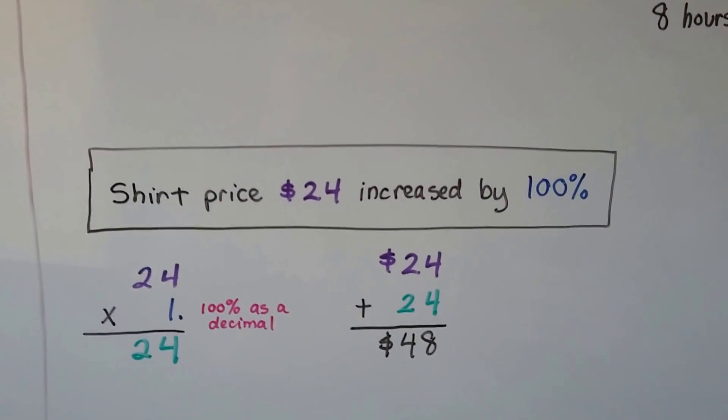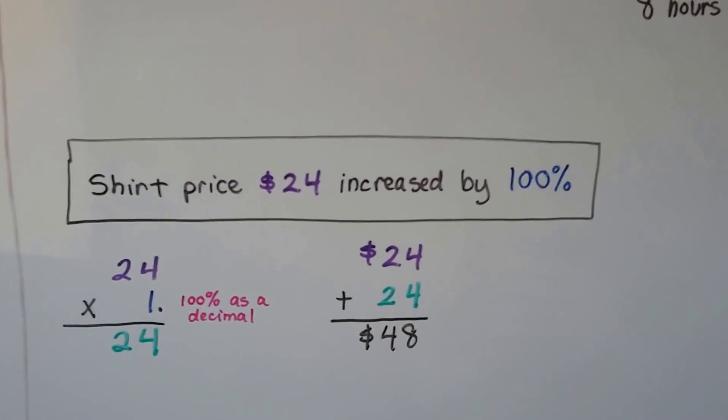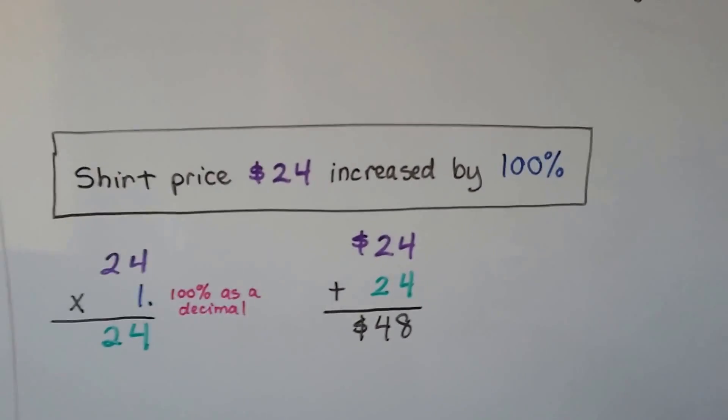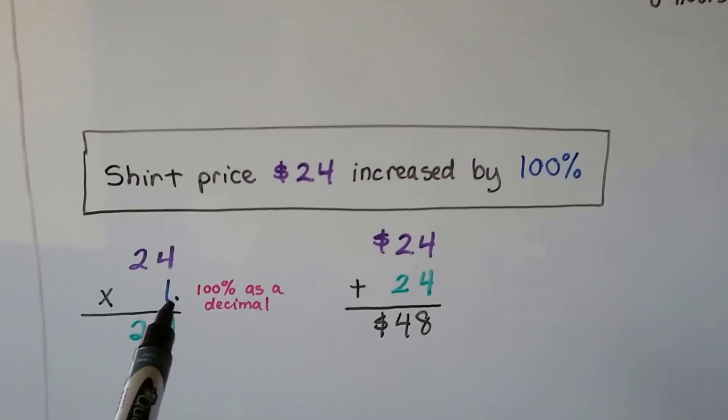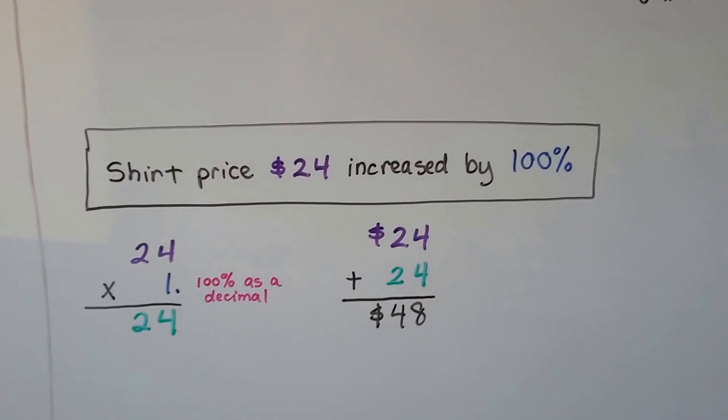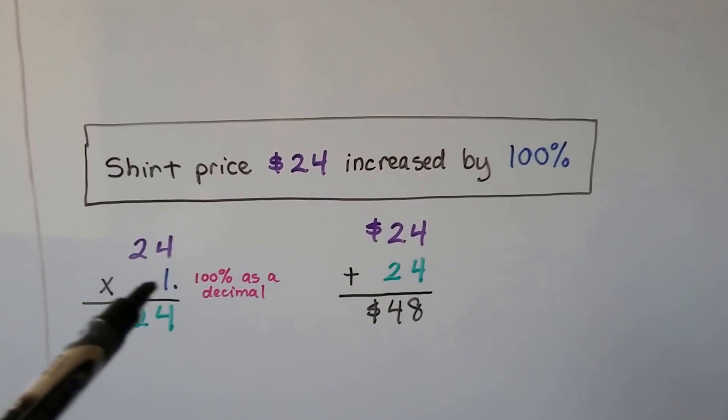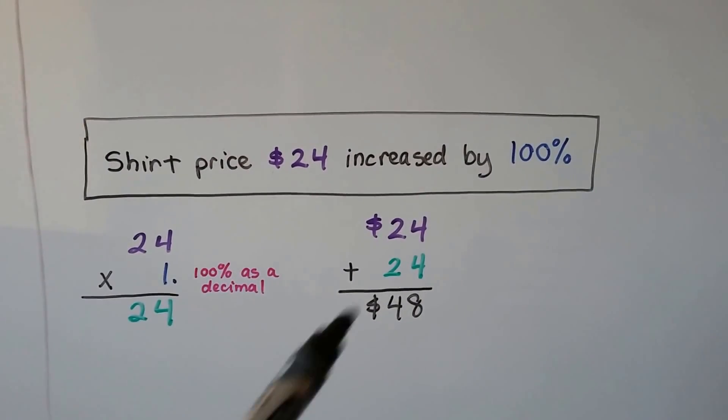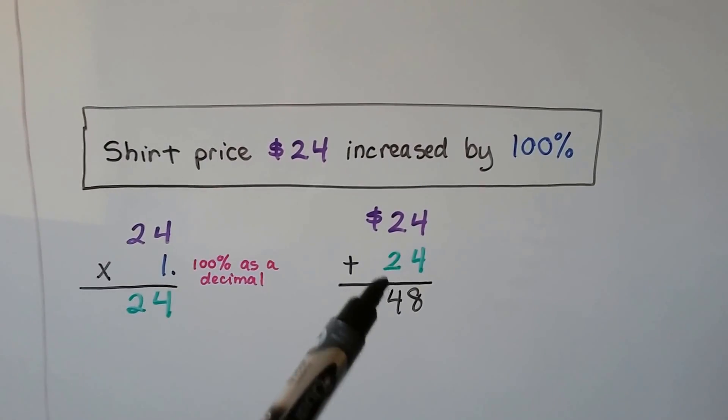A shirt price was $24, and it was increased by 100 percent. 100 percent, written as a decimal, is just a 1. If you have 100 percent of a candy bar, you have one whole candy bar. So we do the 24 times 1, that's 24. We add it to the original amount of 24, and we get $48.